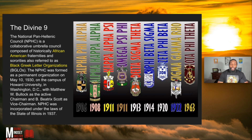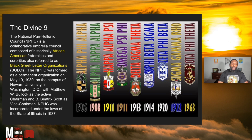So we move along to the Divine Nine — the nine fraternity and sorority organizations that ultimately came out of the Black Boulé. They were established, the first one being Alpha Phi Alpha. The National Pan-Hellenic Council, the NPHC, is the collaborative umbrella council composed of historically African-American fraternities and sororities, also referred to as the BGLO.